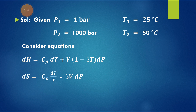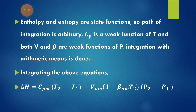For evaluating the enthalpy and entropy changes of liquid water, we take the equations: dH is equal to CP dT plus V into (1 minus beta T) dP, and dS is equal to CP dT by T minus beta V dP. By integrating these two equations, we calculate delta H and delta S — the change in enthalpy and change in entropy. Since enthalpy and entropy are state functions, the path of integration is arbitrary.